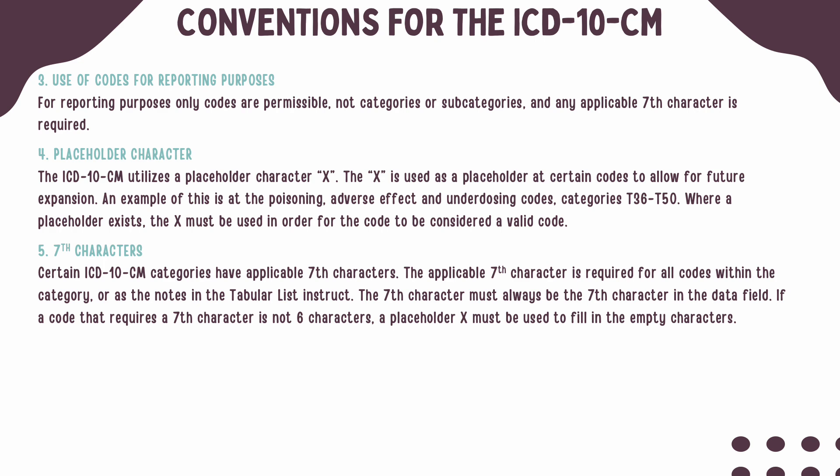ICD-10-CM uses a placeholder notated by the character X. The placeholder will allow for future expansion if needed. When a seventh character is required and your subcategory does not have six characters, the X must be used in order to place your seventh character in the seventh position. Your applicable seventh characters can be found at either the code level or the category level. If they are found at the category level, they will be required for all codes within that category.